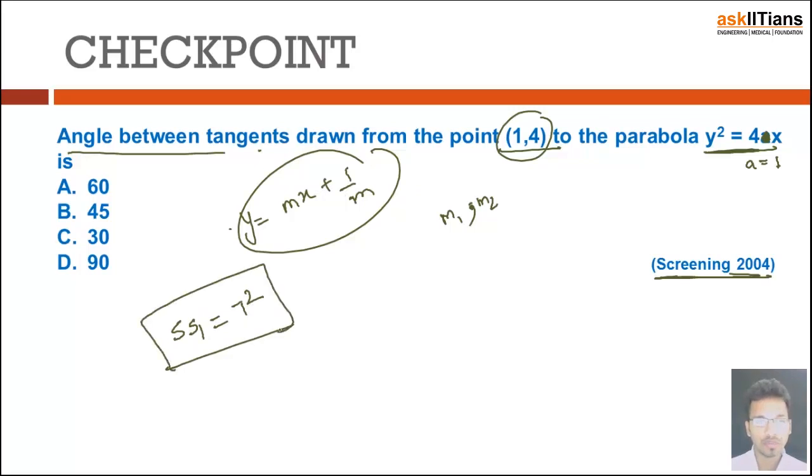If you are quite familiar with it and do questions based on this you will find it very easy. So y² - 4x, and the next one will be 16 - 4, that will be 12, will be equal to T². Now T² is yy₁, that is 4y plus 2a...